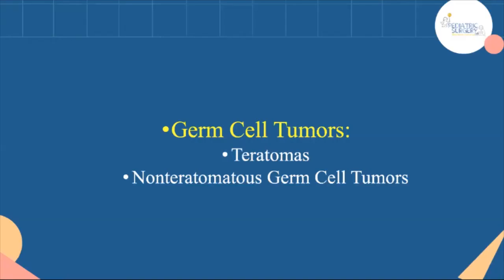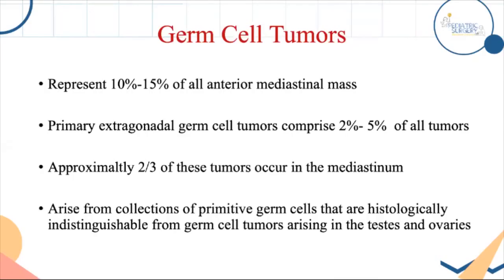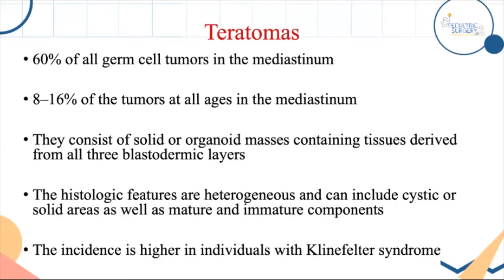Germ cell tumors and teratoma: germ cell tumors represent 10–15% of anterior mediastinal masses. It is important to differentiate primary mediastinal germ cell tumors from secondary ones originating from testis or other sites — always perform abdominal and scrotal ultrasound (or MRI) to rule out a secondary origin. Teratoma is the commonest, accounting for 60% of all mediastinal germ cell tumors and 16% of all mediastinal masses. It originates from the thymus or elsewhere in the chest, is more common in girls early on, and is often diagnosed prenatally.